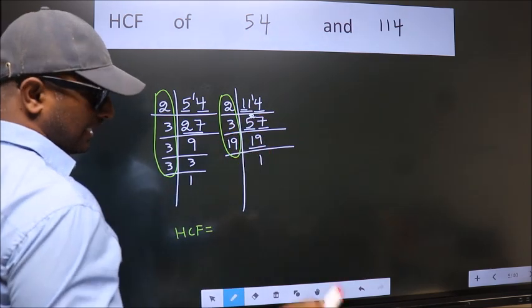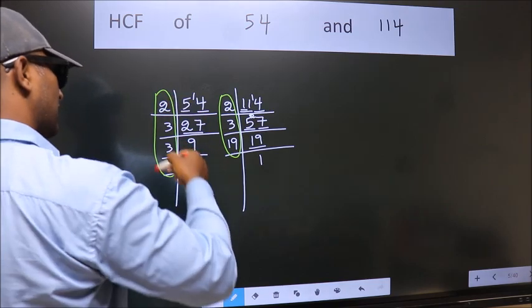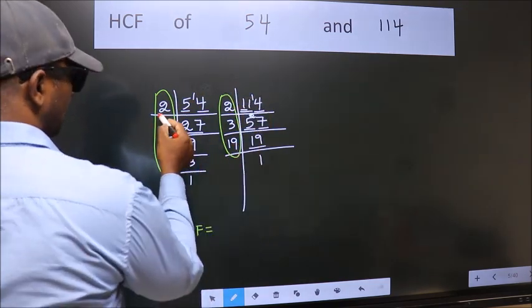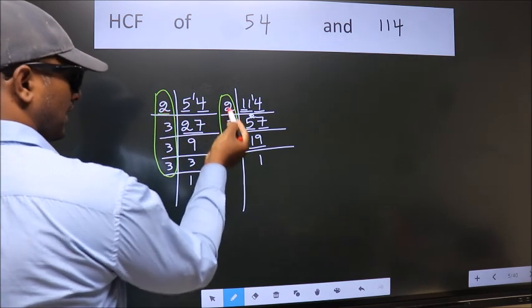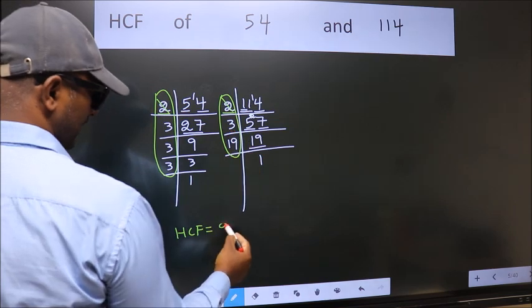So, now let us find the numbers which should be present here and here. Starting with the number 2. Do we have 2 here? Yes.